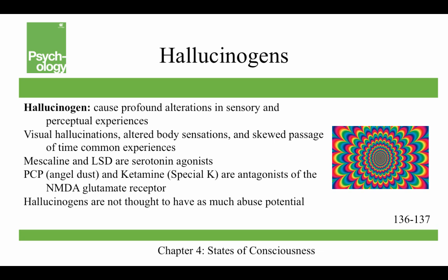Hallucinogens cause profound alterations in sensory and perceptual experiences. People may have visual hallucinations, altered body sensations — such as feeling as if they were a giant — and a skewed passage of time where time seems to slow down. Examples are mescaline and LSD, and they are serotonin agonists. PCP, or angel dust, and ketamine, or special K, are antagonists of the NMDA glutamate receptor. Hallucinogens are not thought to have as much abuse potential compared to the other drug categories discussed.